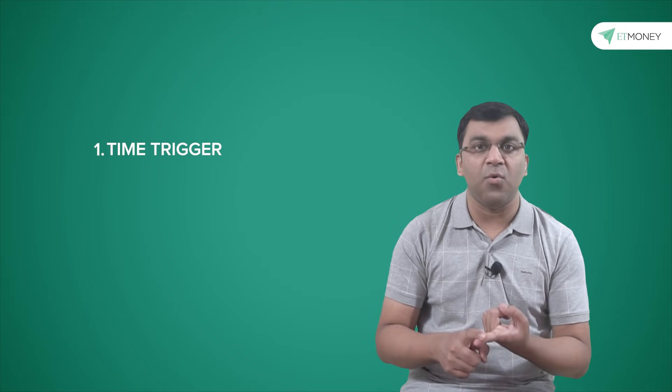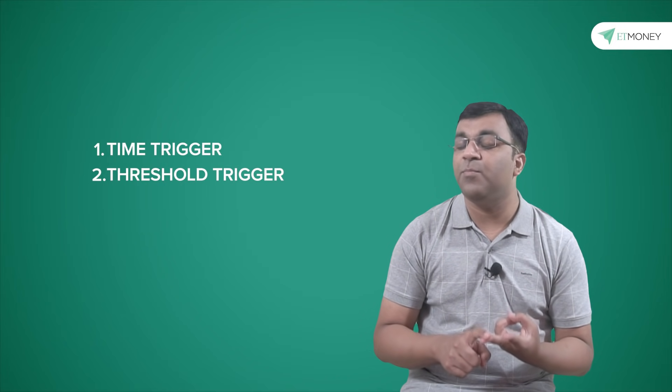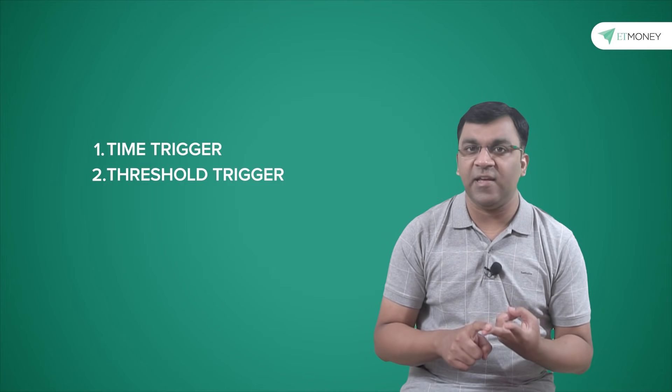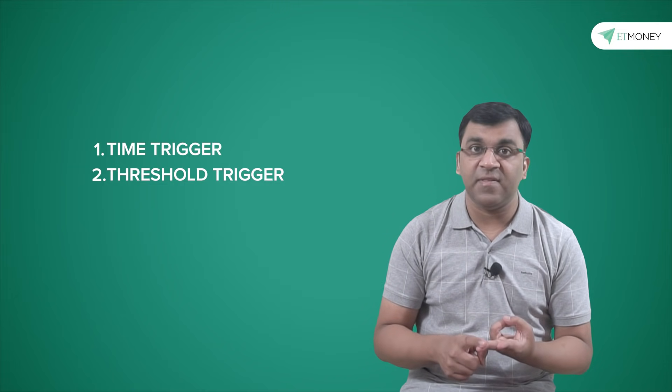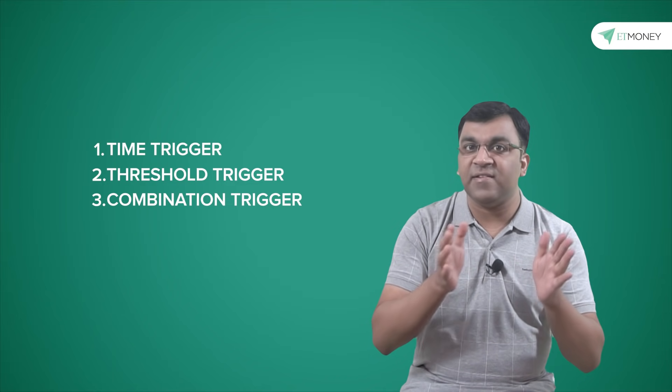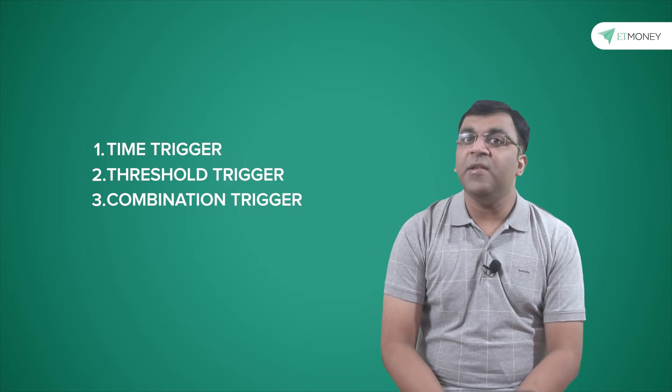There are three types of rebalancing triggers that investors can use. One, a time trigger, where you set a schedule like a month, a quarter or once a year. Two, a threshold trigger, which happens when the portfolio deviates from its target asset allocation by a predetermined percentage like 5%, 10% or 15%. And the third trigger is a combination trigger, which combines time and the threshold trigger. In our opinion, it is this third strategy — the combination of time and threshold — that works best when it comes to rebalancing.